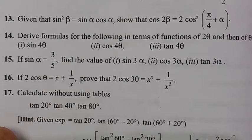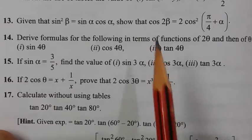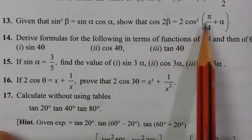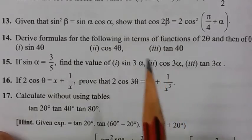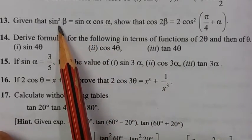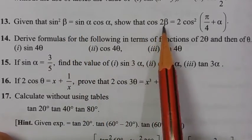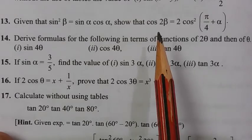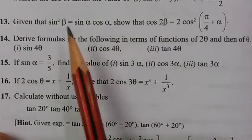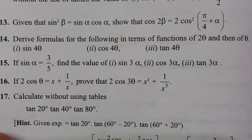Question number 13: Given that sin²β equals sin α cos α, show that cos 2β equals 2 cos²(π/4 + α). The question is complicated. We have the value of sin²β as a relation. We know that cos 2β equals 1 minus 2 sin²β. We will put sin²β in terms of α and then solve it.